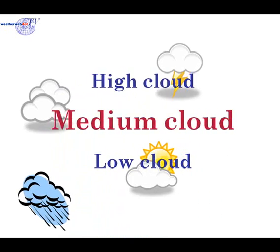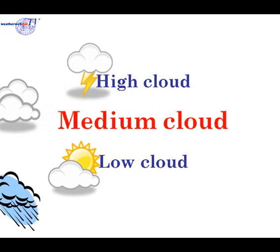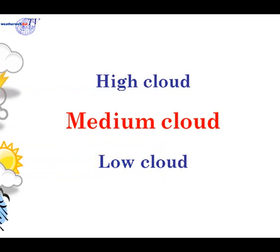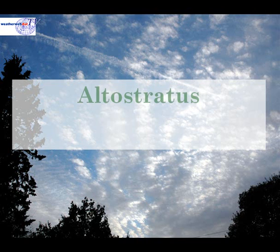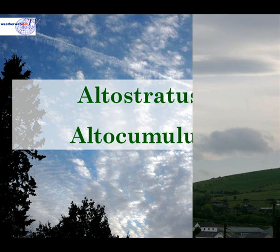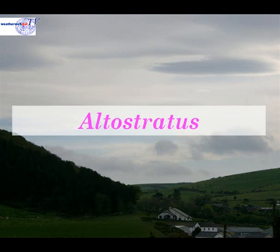In this video we're going to be looking at cloud that occurs in medium levels in the atmosphere. Clouds at this level fall into two categories. The first is alto stratus. The second is alto cumulus — alto meaning high. Firstly we're going to take a look at alto stratus cloud.